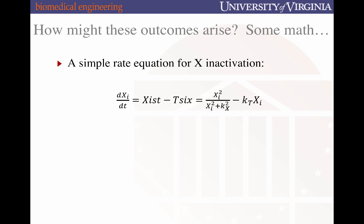We seek to understand how Xist and Tsix regulation might enforce one of two definitive outcomes triggered by a random initial choice. To do so, we must abstract the biology as a rate equation describing the dynamics of the Xi state as a function of time. We'll begin with a simple rate equation for X inactivation. We assume that the rate of X inactivation per unit time is a function of the production rates of Xist and Tsix.